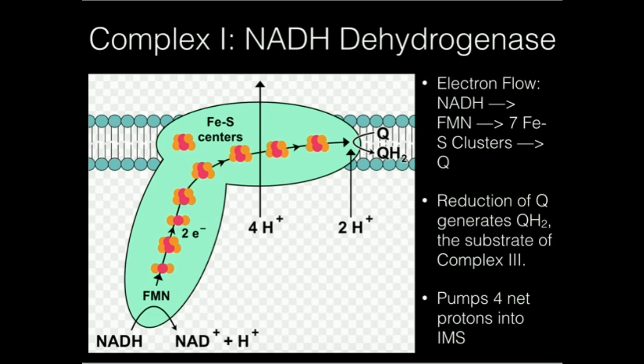And as we said, that ubiquinol is going to be processed by complex III in a separate video. One of the other important implications of complex I is that it pumps four protons from the matrix down here into the intermembrane space. In fact, all the enzymes we're going to see that are proton pumps pump protons unidirectionally from the matrix into the intermembrane space. And this is the function of complex I.